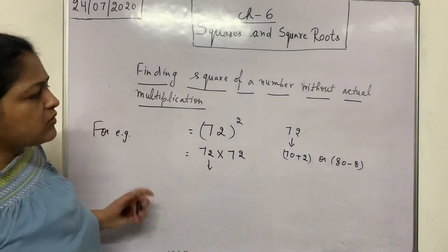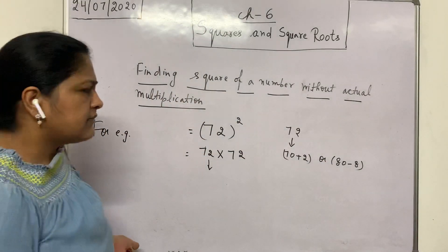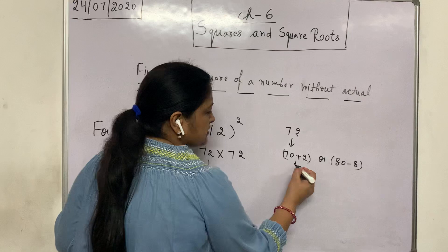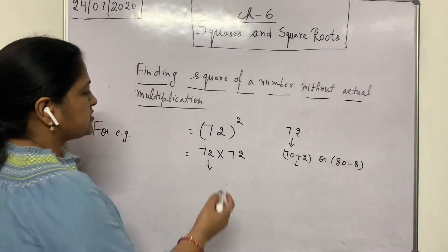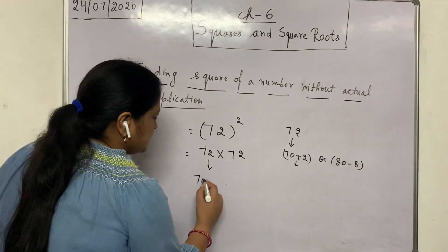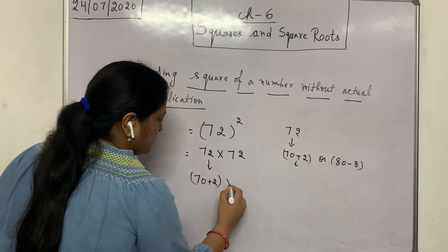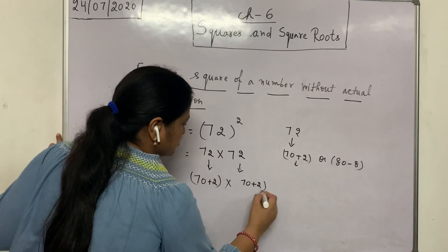So whatever you feel you are comfortable, you can take that. But obviously, this is more easy to calculate. So I have split 72 as 70 plus 2, and this also 70 plus 2.